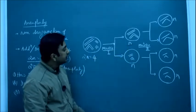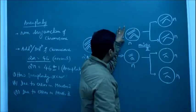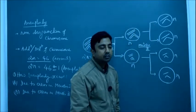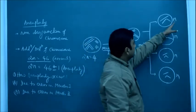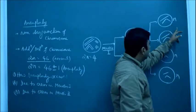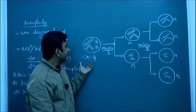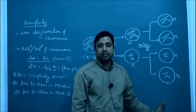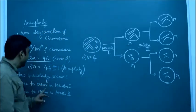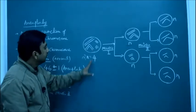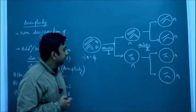In meiosis 2, it is just like mitosis, so each daughter cell divides again into two daughter cells. After meiosis 2, the daughter cells have n number of chromosomes — we started with 2n and ended with n. This is the normal condition. Now, what would happen if there is an error in meiosis 1?